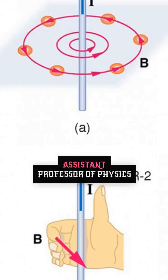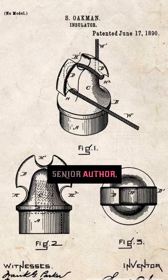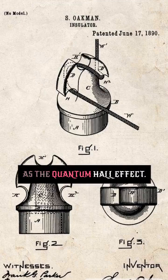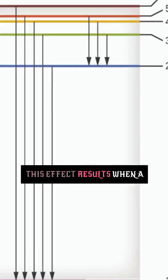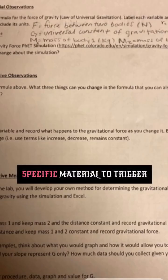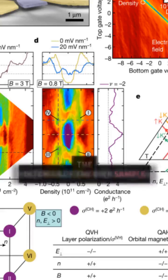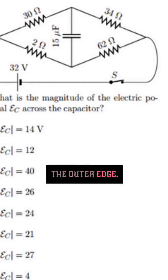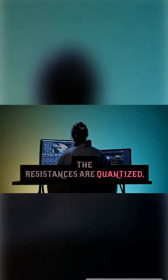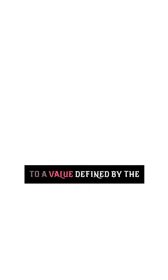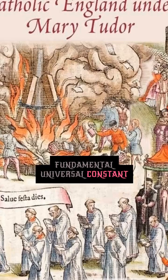The project, led by Katya Nowak, assistant professor of physics in the College of Arts and Sciences and the paper's senior author, has its origins in what's known as the Quantum Hall Effect. First discovered in 1980, this effect results when a magnetic field is applied to a specific material to trigger an unusual phenomenon. The interior of the bulk sample becomes an insulator while an electrical current moves in a single direction along the outer edge. The resistances are quantized, or restricted, to a value defined by a fundamental universal constant, and drop to zero.